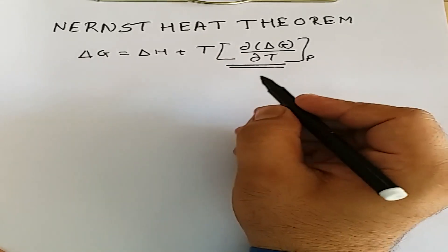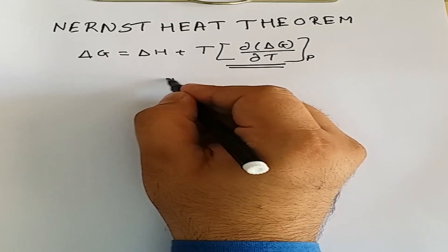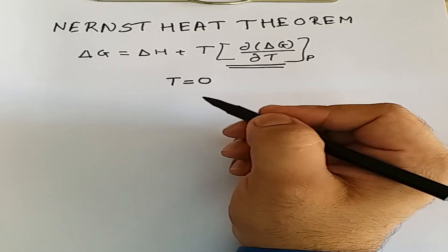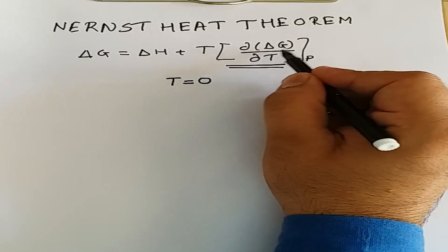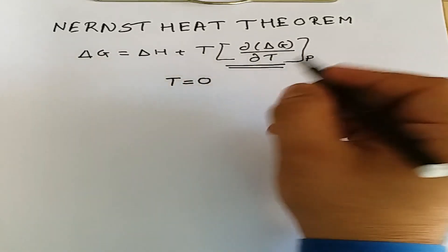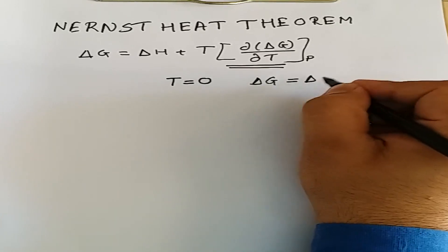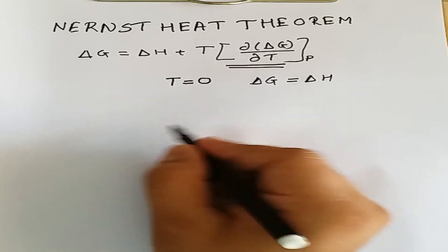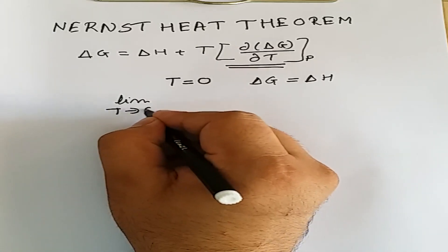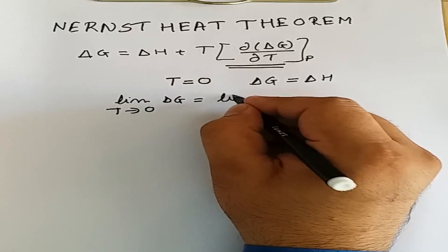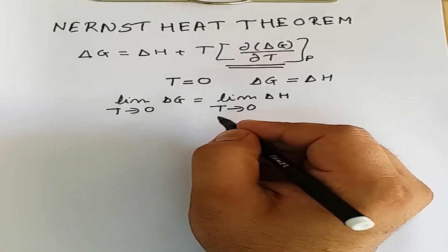Now if we consider that our system is at absolute zero, the temperature T will be equal to zero. Under such circumstances, the second term T(dΔG/dT) will be equal to zero, and hence the change in Gibbs free energy will be equal to the enthalpy change. In other words, the limit as T tends to zero of ΔG will be equal to the limit as T tends to zero of ΔH.